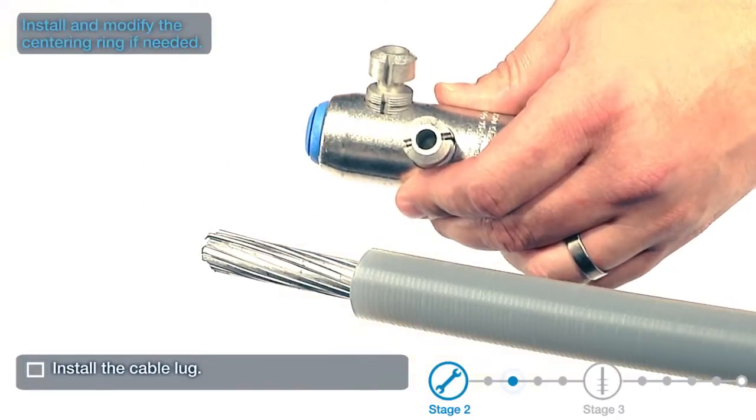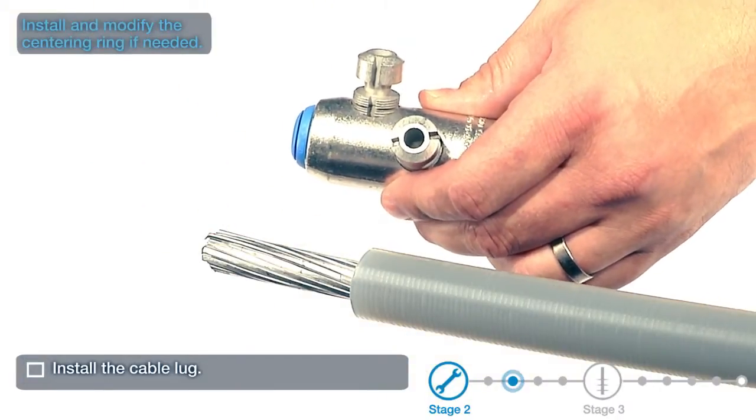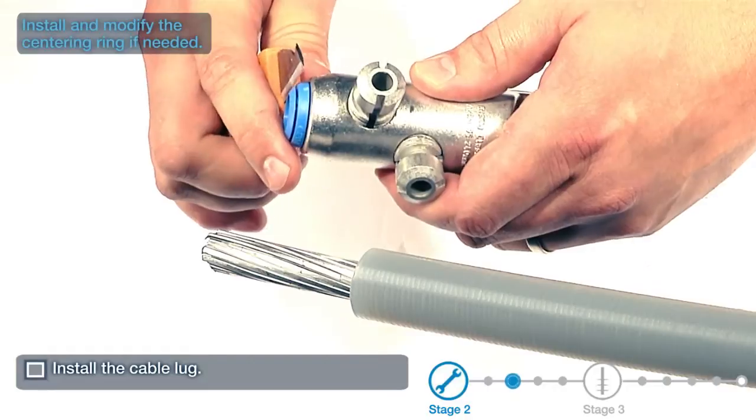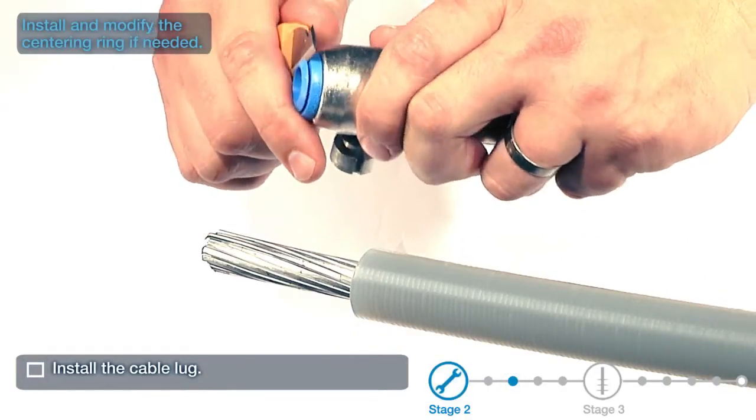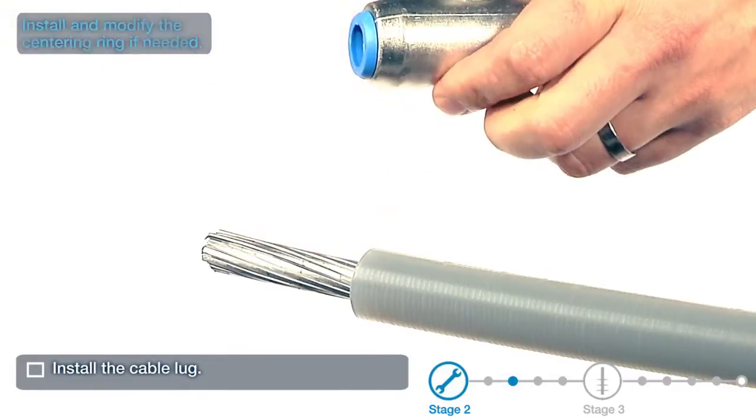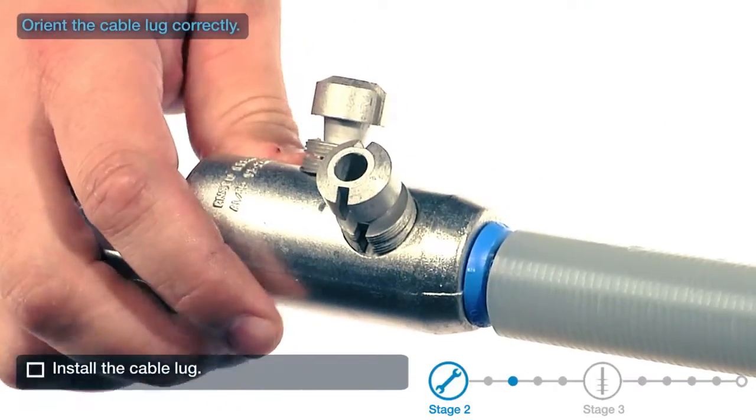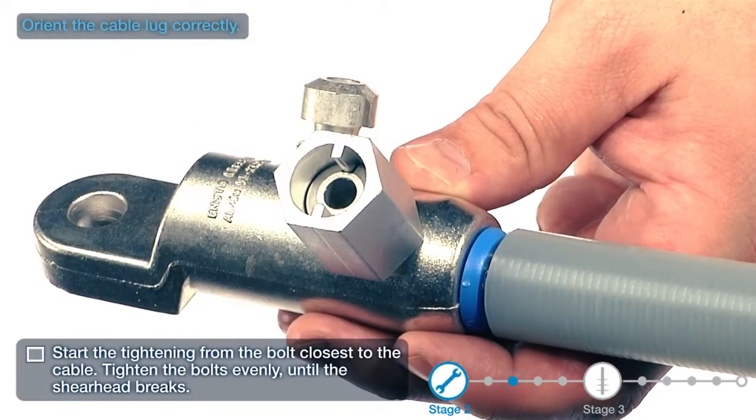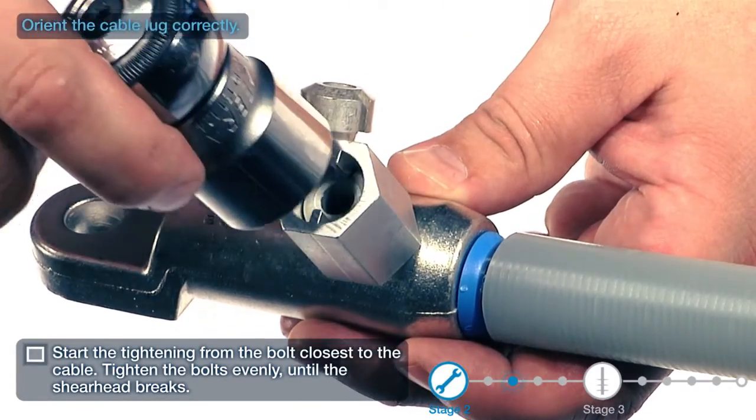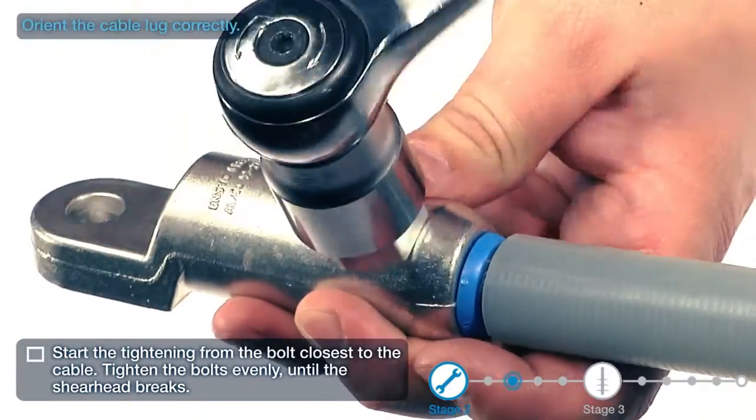Install and modify the centering ring if needed. Orient the cable lug correctly. Start tightening from the bolt closest to the cable. Tighten the bolts evenly until the shear head breaks.